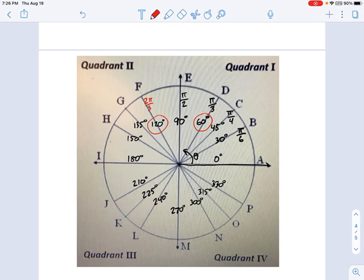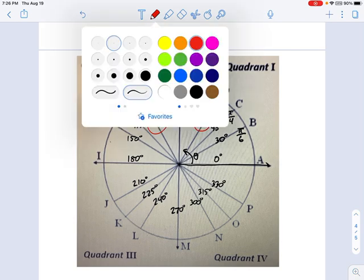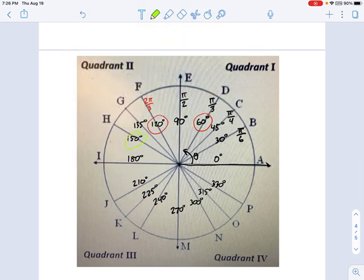And 150 degrees is 5 times as big as 30. So that means this is 5 pi over 6. Sorry about the obnoxious green there, but you get the idea. So that's one thing you can do to memorize the radians.